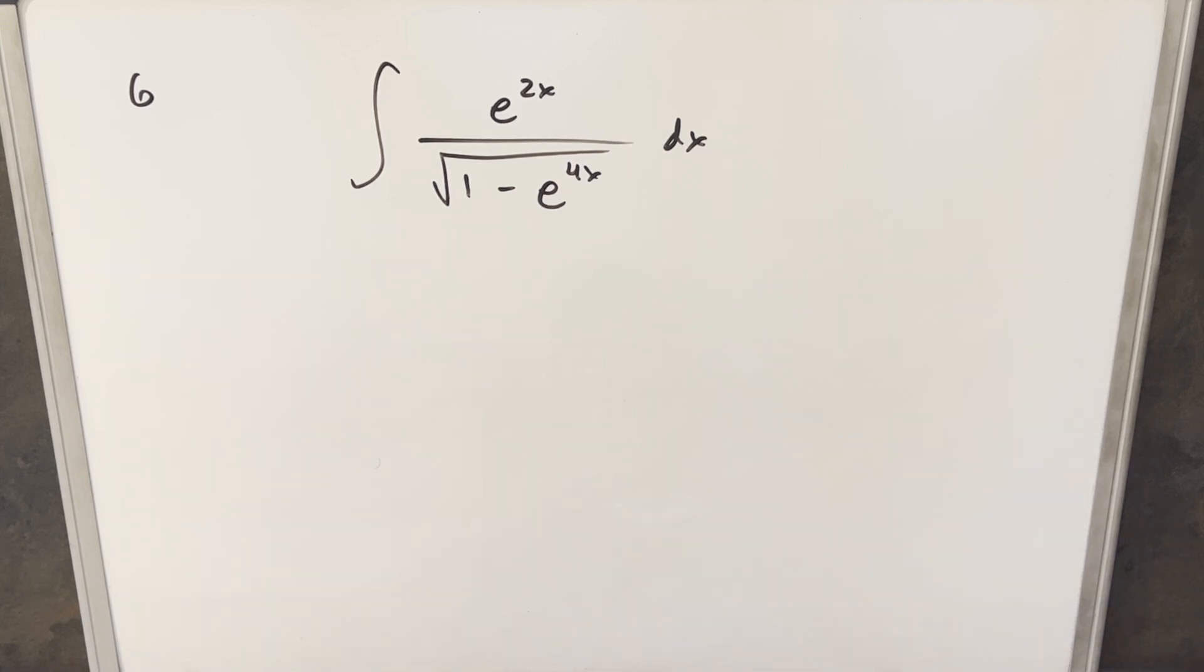Okay, the first thing I'm noticing here is just this similarity with the e to the 2x, e to the 4x. It's making me think a u substitution could work.